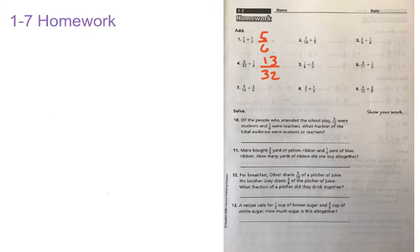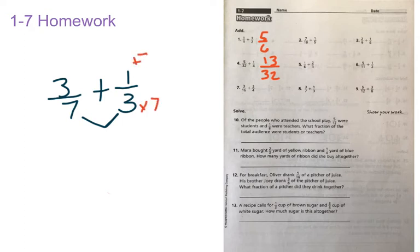So we're going to go ahead and look at number 8 together. Number 8 is 3 7ths plus 1 3rd, and 3 cannot go into 7, and so this is one where we're going to multiply them by each other. 7 times 3 is equal to 21, as is 3 times 7 is equal to 21. So I'm going to multiply top and bottom by 7 on this side, and 1 times 7 is equal to 7, and 3 times 7 is equal to 21.